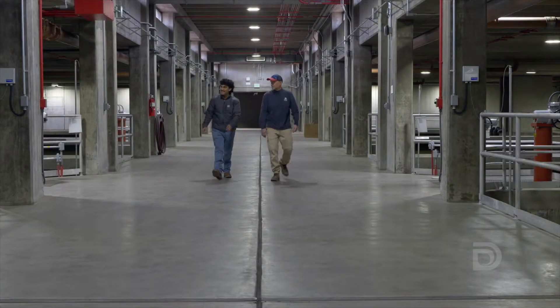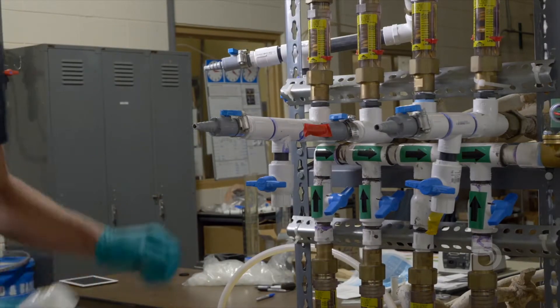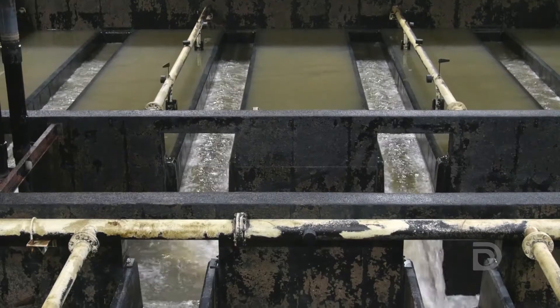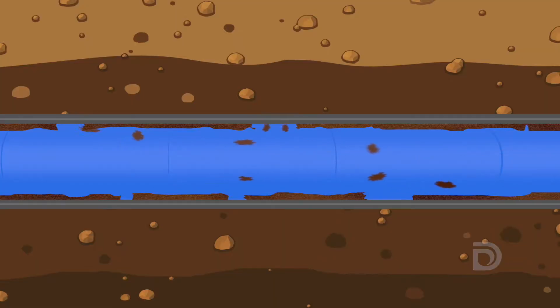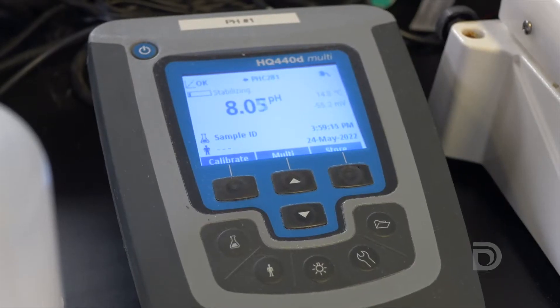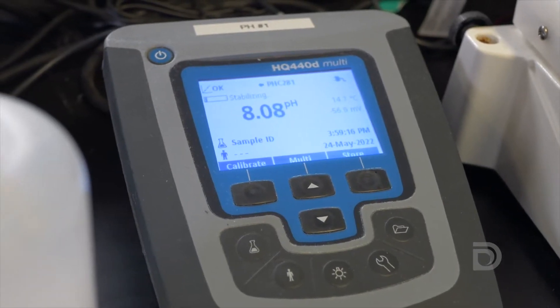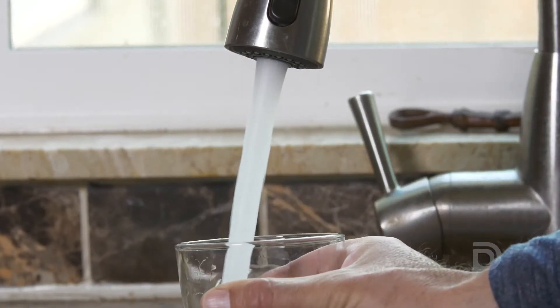Everyone here at the Foothills Treatment Plant, as well as Denver Water's other treatment plants, has played a key role in the lead reduction program. While there's no lead in the water that we send to our customers, lead can sometimes get into the water when it goes through a lead service line at a customer's home. That's why we adjust the pH level of the water here at the plant, which helps prevent lead from getting into the water as it moves through lead pipes.